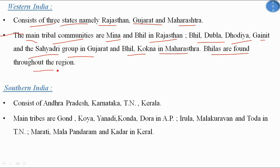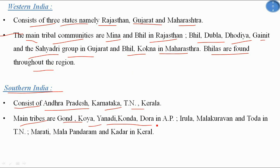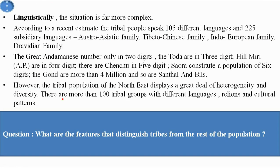Southern India consists of Andhra Pradesh, Karnataka, Tamil Nadu, and Kerala. The main tribes are Gaunt, Koya, Yanadi, Konda, and Dora in Andhra Pradesh; Irula, Mallak Kurvam, and Toda in Tamil Nadu; and Marathi, Malapandaram, and Kadar in Kerala.